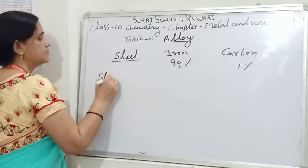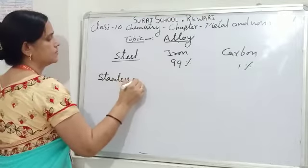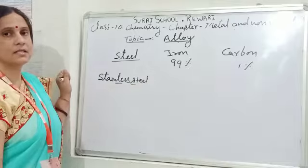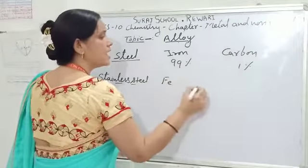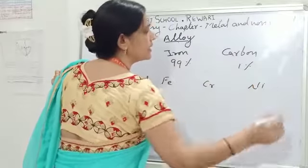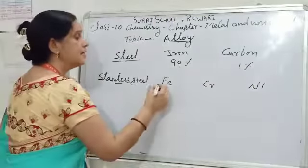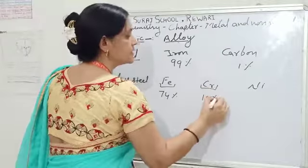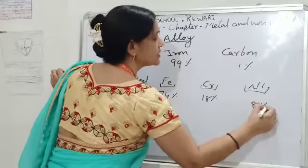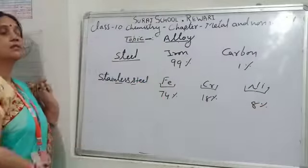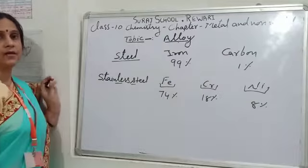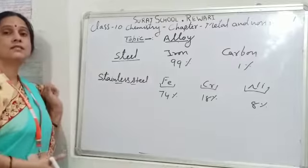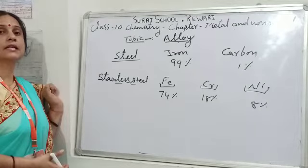Stainless steel is somehow of better quality than steel. In stainless steel, the constituents are iron, chromium, and nickel. Iron is at 74%, chromium is at 18%, and nickel is at 8%. If we mix these three elements in this ratio, we get another alloy called stainless steel. Stainless steel is used to make utensils, cutlery, surgical items, etc.